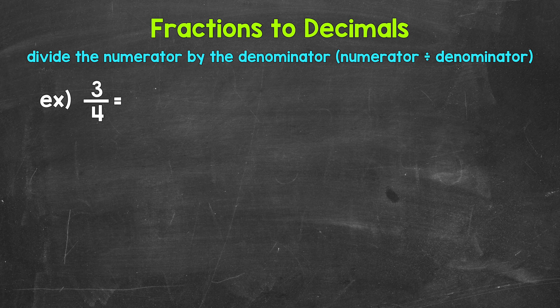When we convert a fraction to a decimal, we can divide the numerator, the top number of the fraction, by the denominator, the bottom number of the fraction. So for 3 fourths, we can set this up as 3 divided by 4.